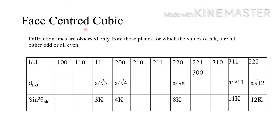For face centered cubic, diffraction lines are observed only from planes for which the hkl values are all either odd or all even; all other planes are absent. So: 100 is absent (mixed), 110 is absent (mixed), 111 is present (all odd), 200 is present (all even), 210 absent, 211 absent, 220 present, 300 absent, 310 absent, 311 present, 222 present.